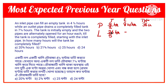For the outlet pipe or leak: 36 ÷ (36/5) = 36 × (5/36) = 5. But since this is a leak (outlet), the efficiency is negative: −5 units per hour. So it can empty 5 units of water per hour.